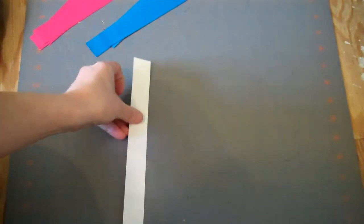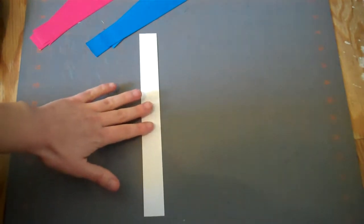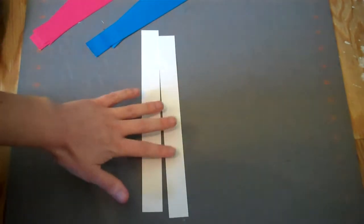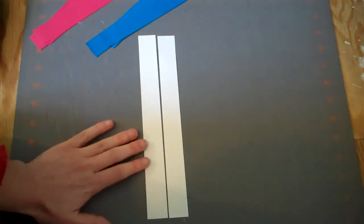Once you have all your strips cut, start by laying out your white strips without the tray. Make sure they're all touching one another.